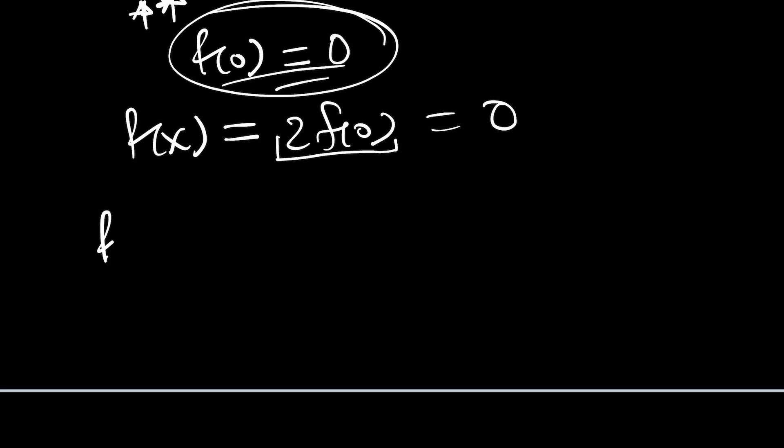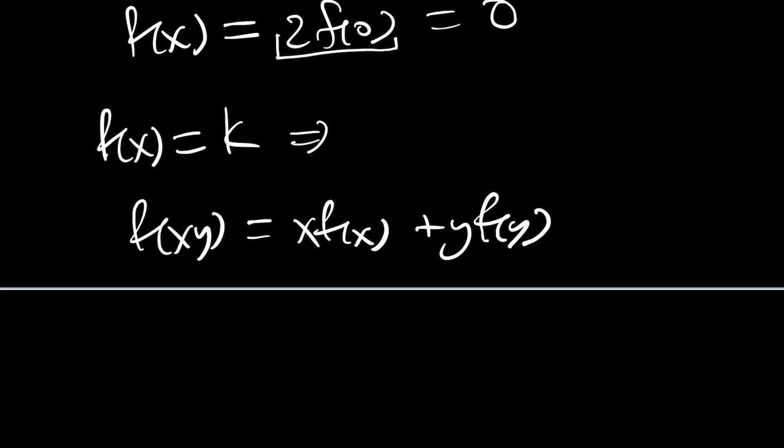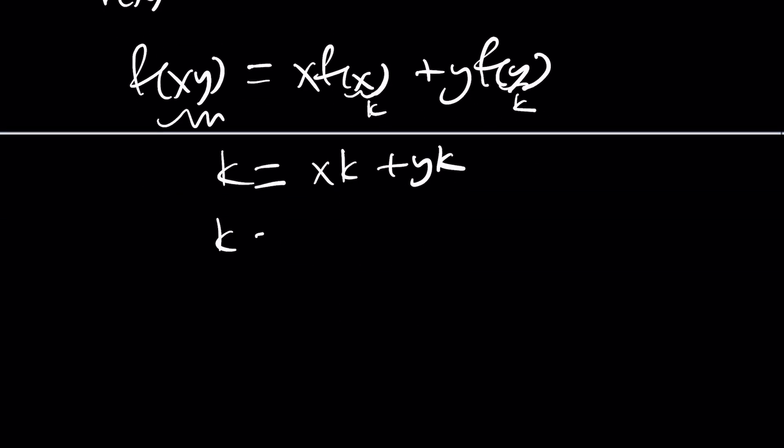But you can also think of it this way. If f of x is a constant, let's just say f of x is k. Okay? Then from the original equation, f of xy equals xf of x plus yf of y, right? If f of x is equal to k, this will be a k. And then this will be a k and this will be a k. So it will be xk plus yk. All right? And then we can factor out a k here and write this as k times x plus y. And of course, this is only true either if x plus y is one or k is zero.